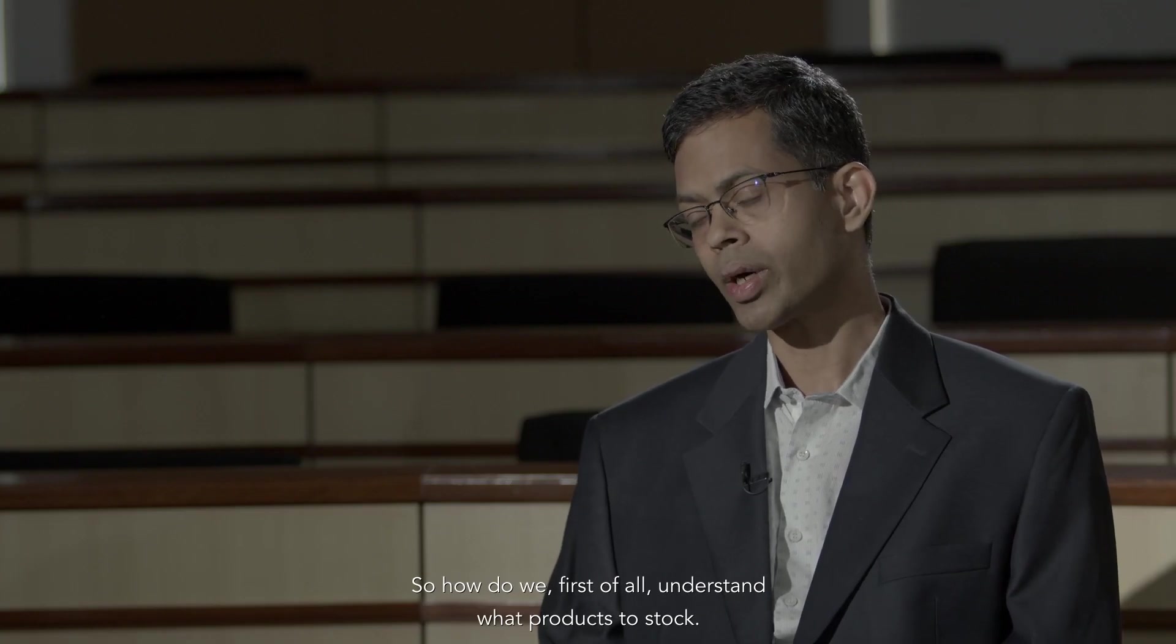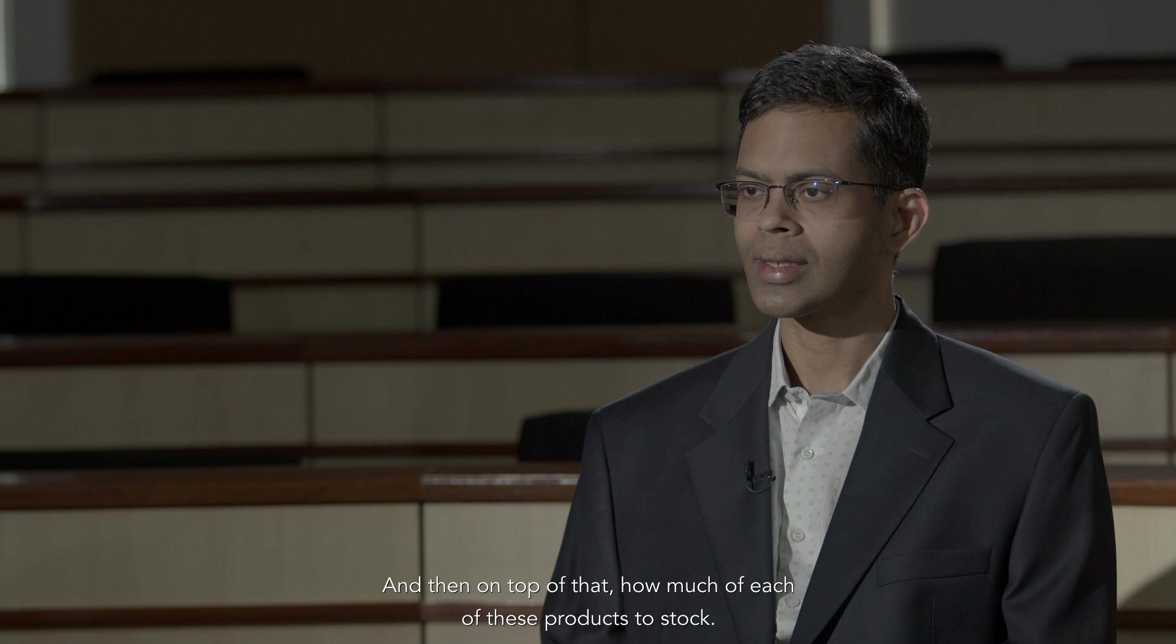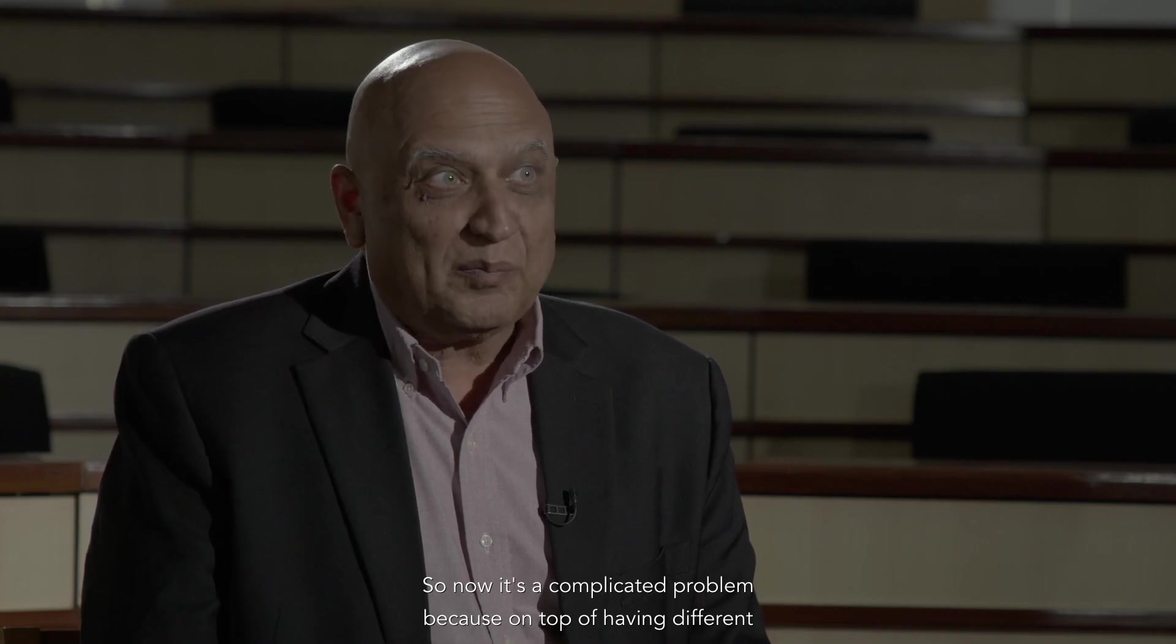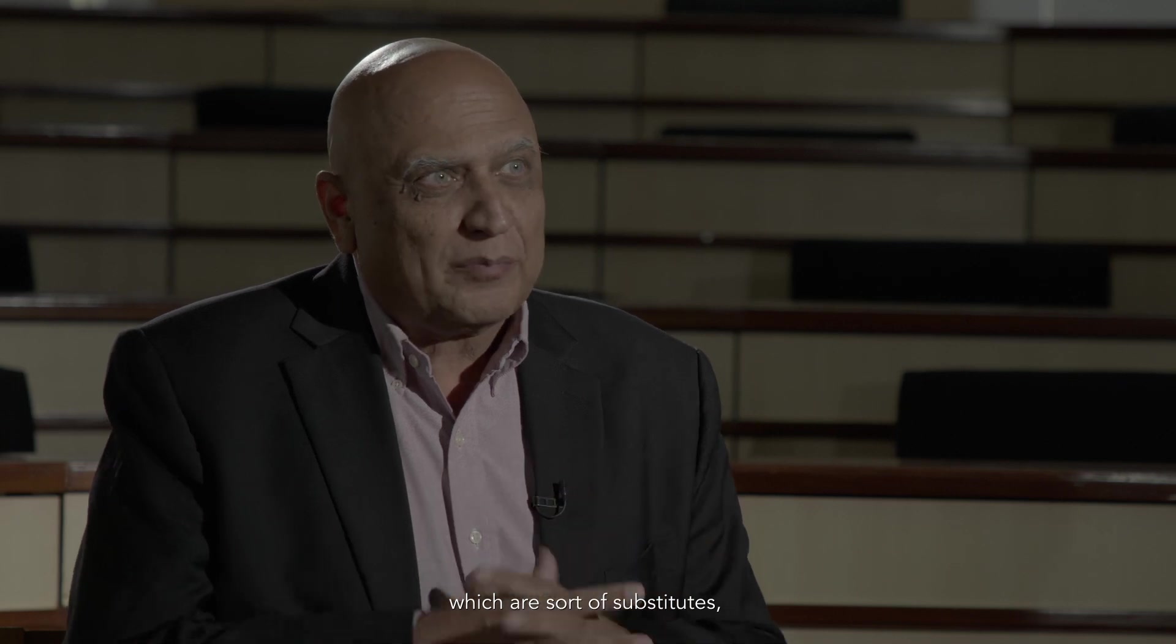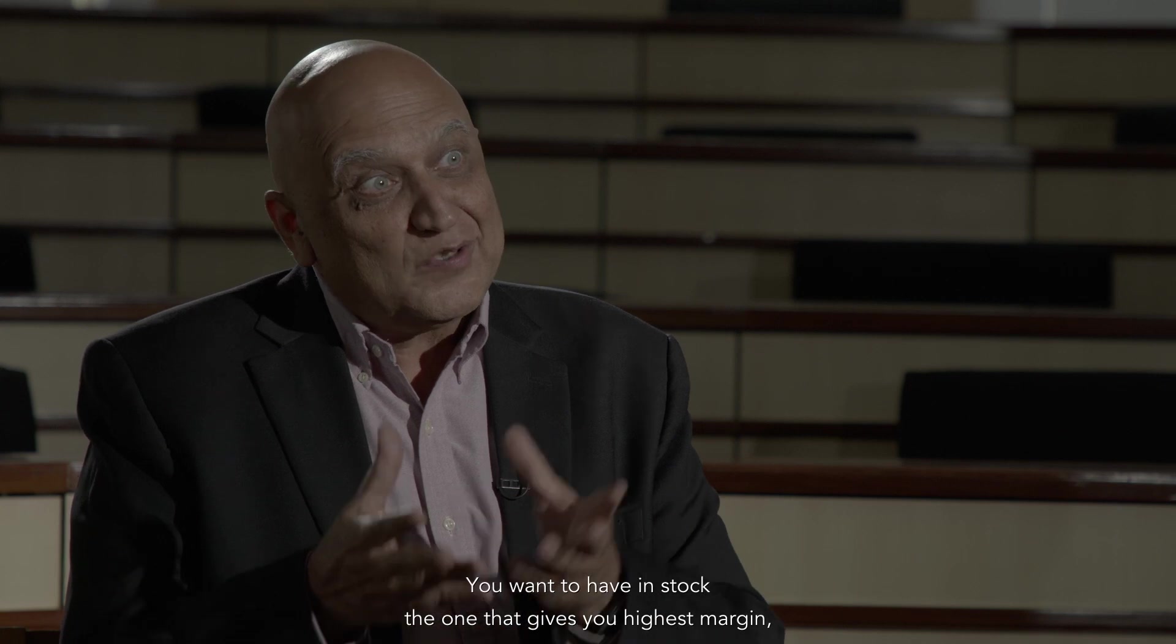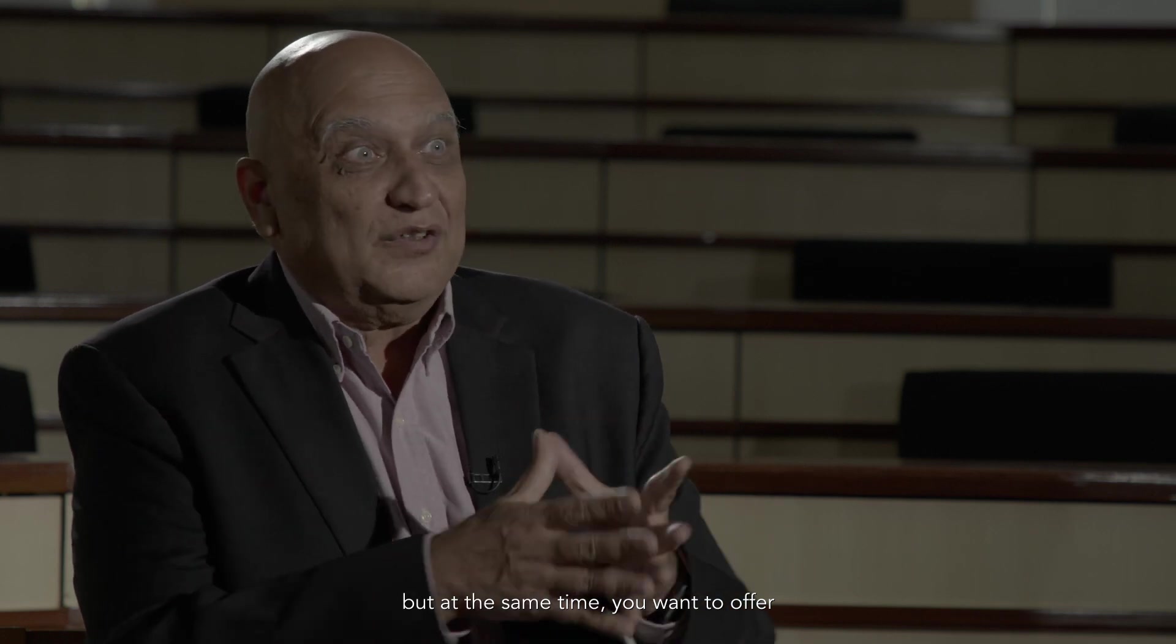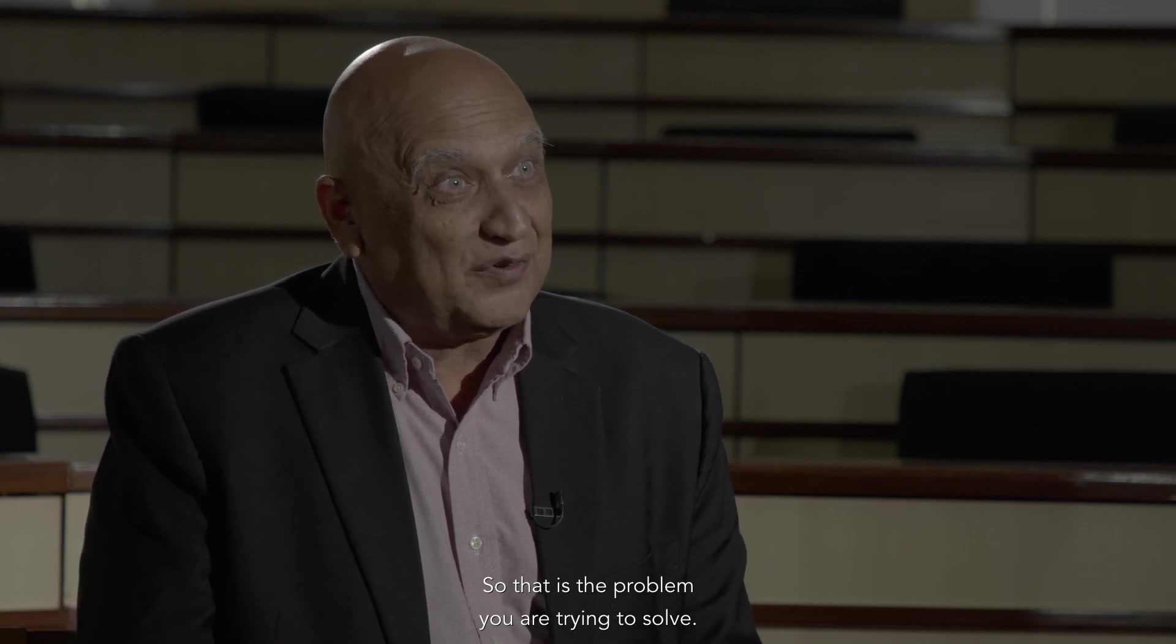Which is actually pretty important because usually if I'm buying, let's say, yogurt, I'm not just interested in one. I could buy Danone or I could buy something else. So you're saying you could offer me different types of products which are substitutes of each other. So that's the innovation in your paper. Now you're studying not just one product, but many such products. So how do we, first of all, understand what products to stock? That is the assortment question. And then on top of that, how much of each of these products to stock? Which is an inventory question.